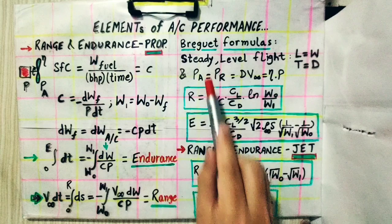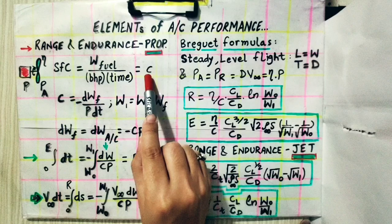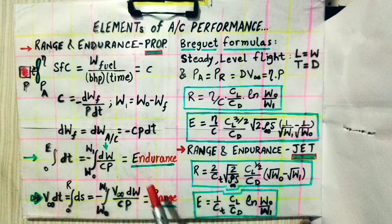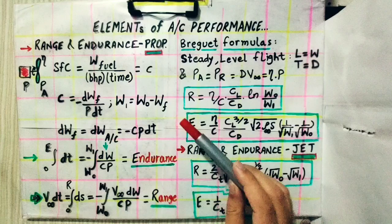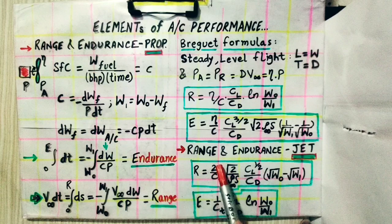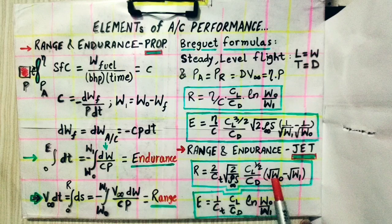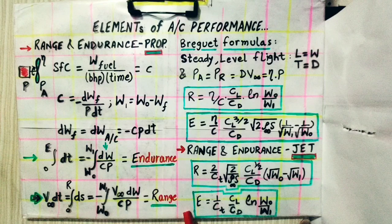With brake horsepower replaced by thrust (which equals drag in steady level flight), the range and endurance formulas for a jet airplane are derived. The range of a jet aircraft is: R = (2/C_T) × √(2/(ρ∞·S)) × (C_L^(1/2)/C_D) × (√W₀ − √W₁), where C_T is the specific fuel consumption and S is the planform area. The endurance is: E = (1/C_T) × (C_L/C_D) × ln(W₀/W₁).